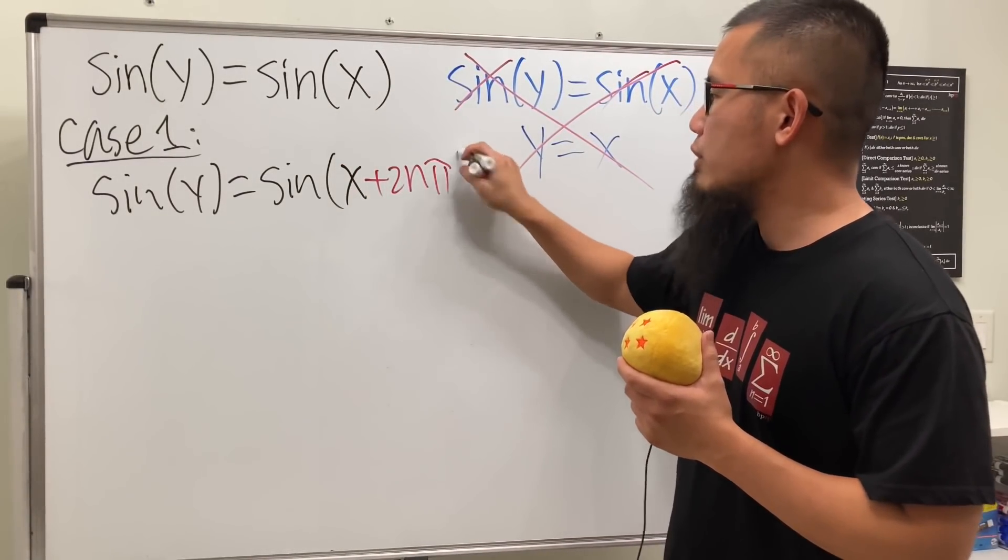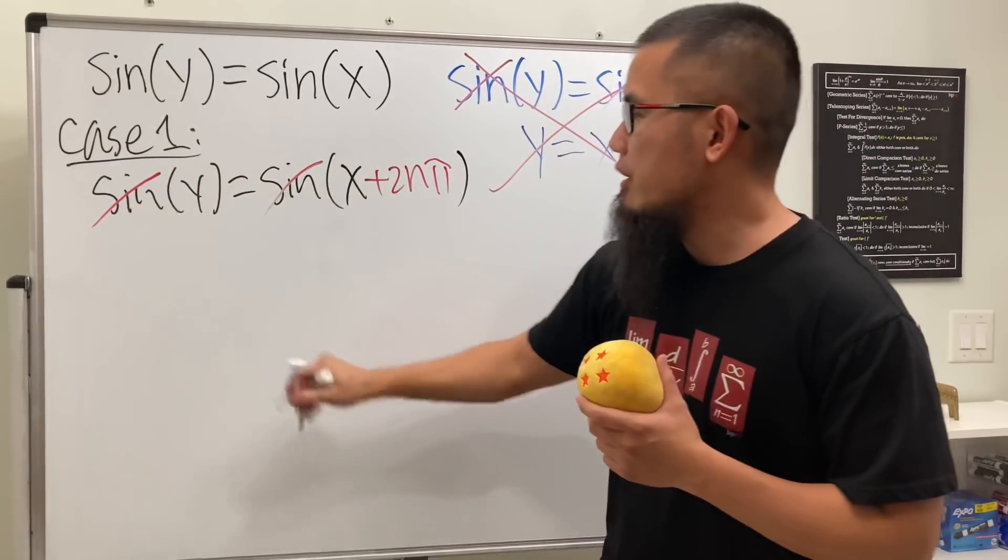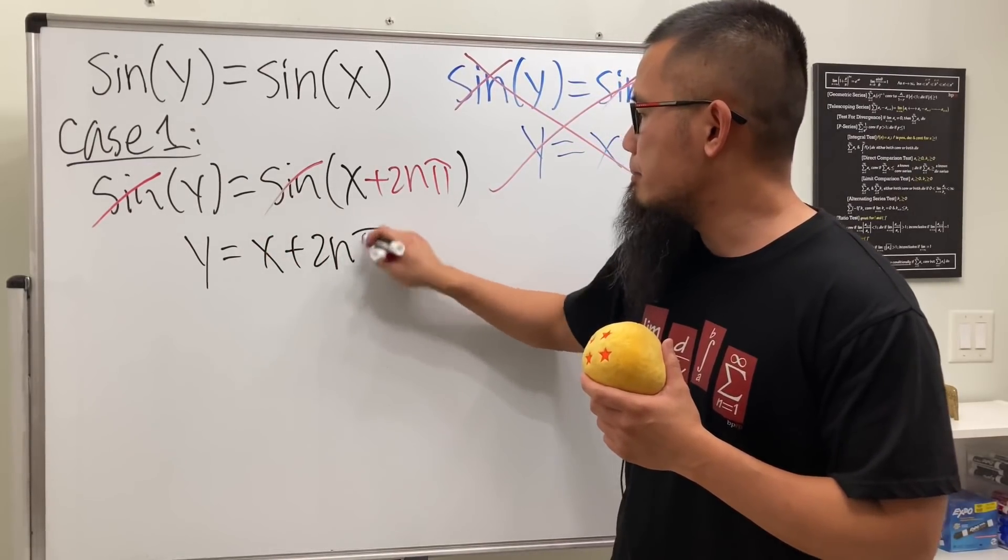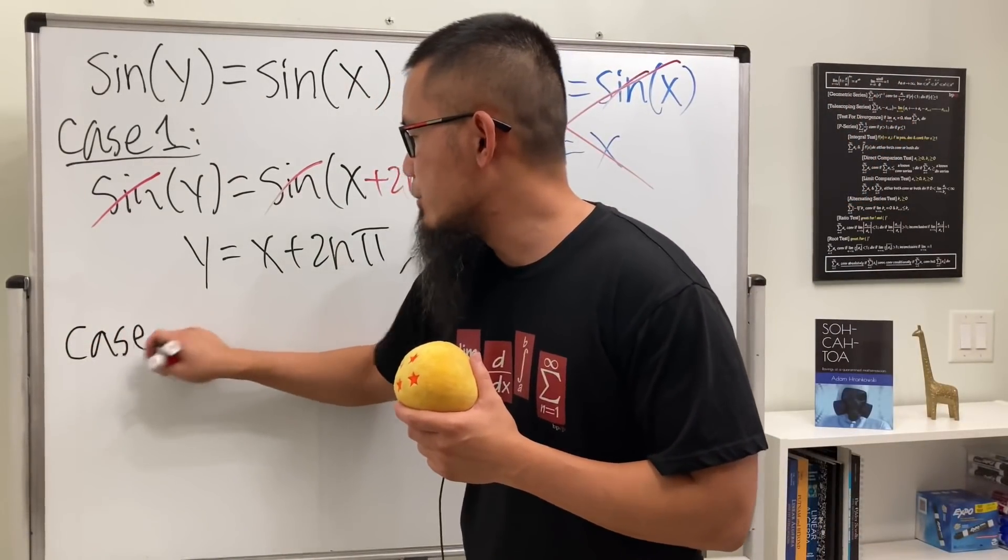Now we can legitimately cancel the sine and say y equals this, which is x plus 2nπ. Of course, n is an integer. So that's it for the first case.